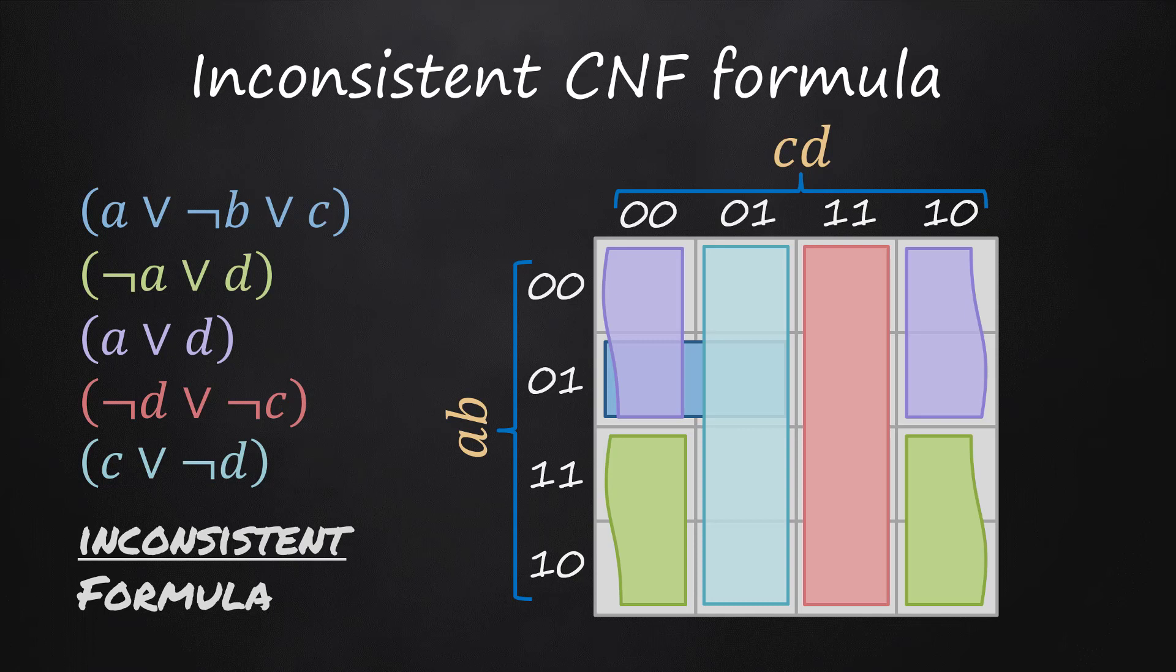We immediately see that each interpretation is covered by at least one slab, then falsifies at least one clause. In such a case, the formula is said to be inconsistent.